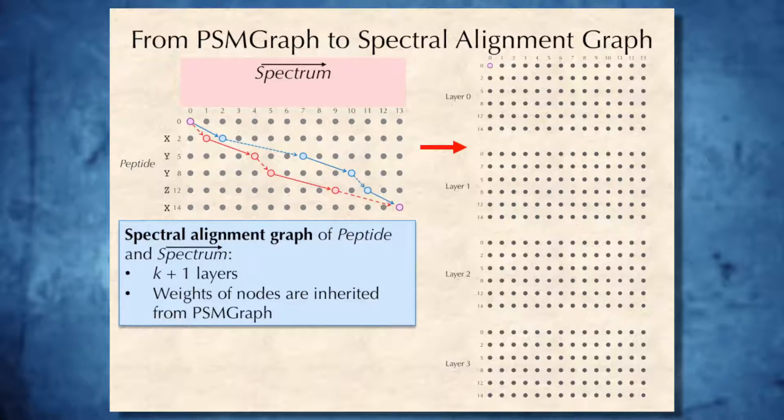To find an optimal path in the PSM graph with an additional constraint on the number of non-diagonal edges k, we will construct yet another graph, which is called the spectral alignment graph. This graph will have k plus 1 layers, and each layer will be identical to the PSM graph. Weights of nodes in the spectral alignment graph will be simply inherited from the nodes in the PSM graph. Now, this graph on the right side of the slide, spectral alignment graph, is currently disconnected. There are no edges connecting different layers of this graph. We will connect layers of this graph in the following way.